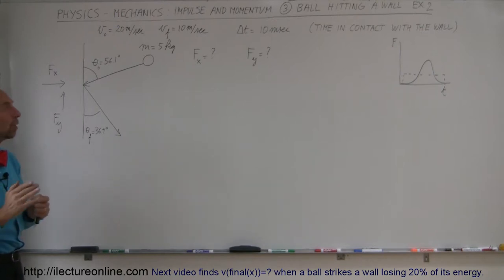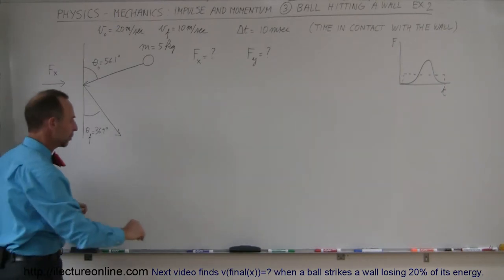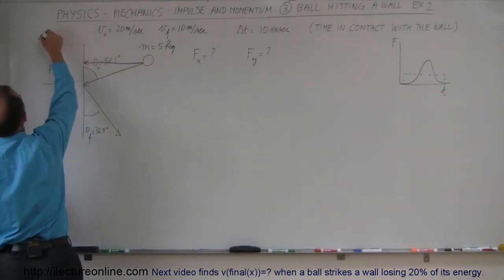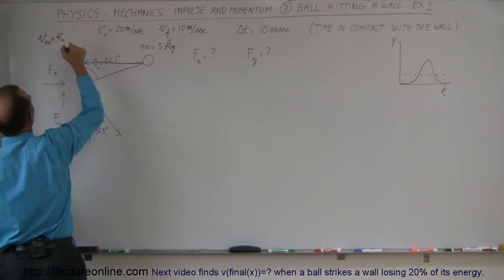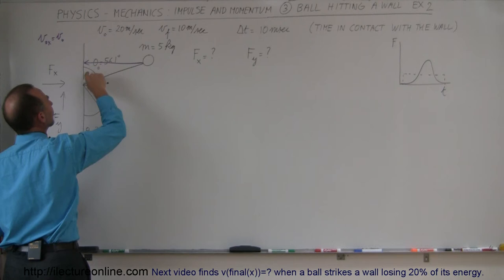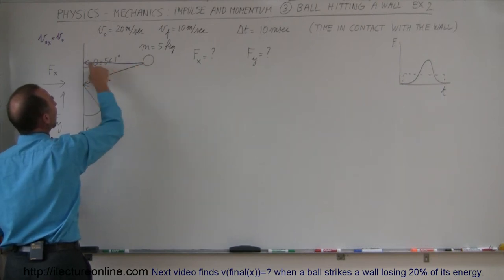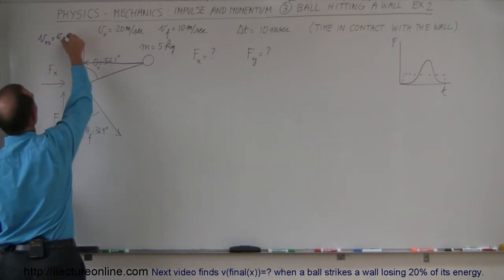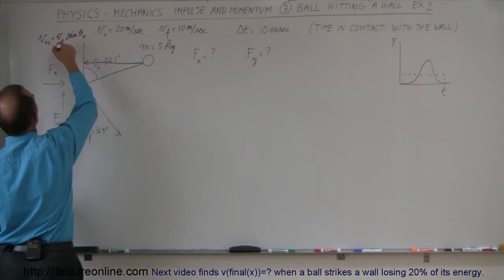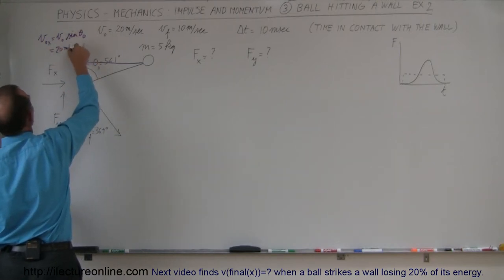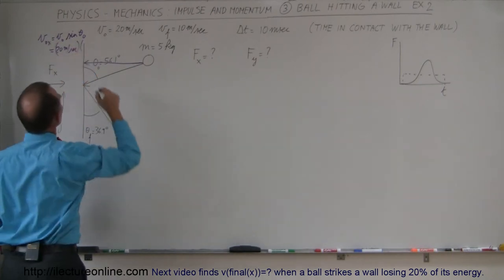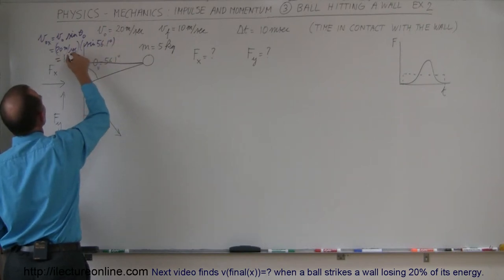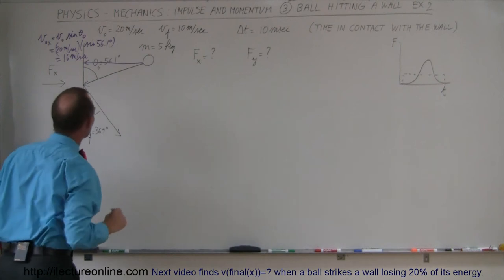Before we can solve the problem we want to find the initial velocity in the x and y directions. The initial velocity in the x direction: since the angle of 56.1 degrees is measured from the wall, the x-component is opposite to this angle, so it's the sine of theta. That gives us 20 meters per second times the sine of 56.1 degrees, which is 0.8, so that's 16 meters per second initially in the x direction.